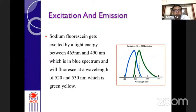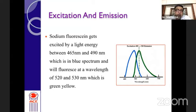The retina is the only tissue in the body where we can see bare vessels. The inner and outer blood-retinal barriers are impermeable to fluorescein, whereas the choriocapillaris is freely permeable. Sodium fluorescein gets excited at light energy between 465 to 490 nanometers — the blue spectrum — so we need a blue filter. The fluorescence wavelength is 520 to 530 nm, which is the green-yellow spectrum.